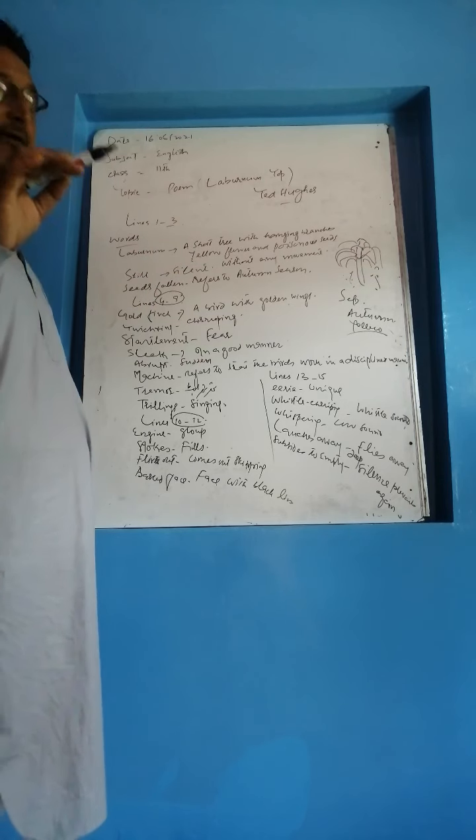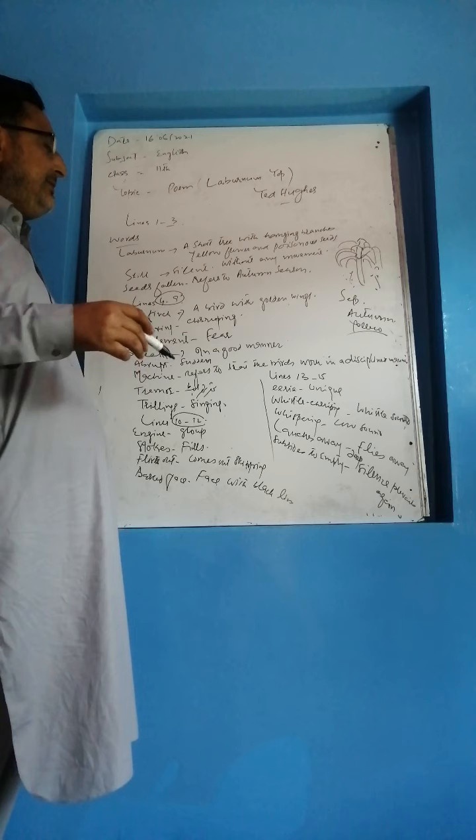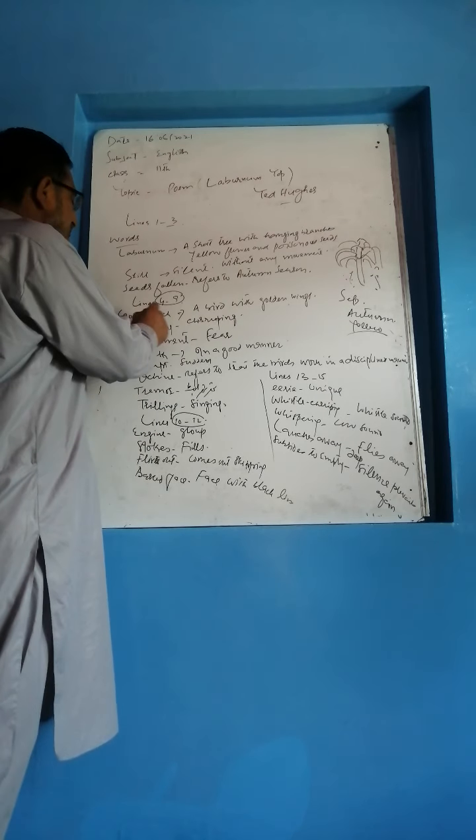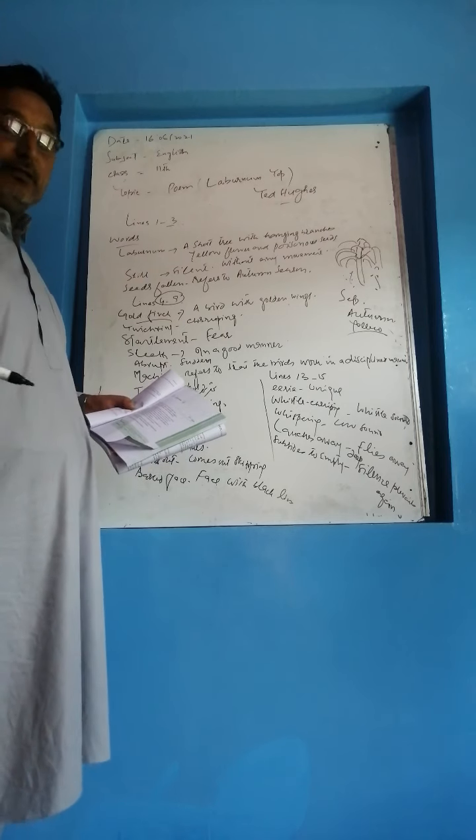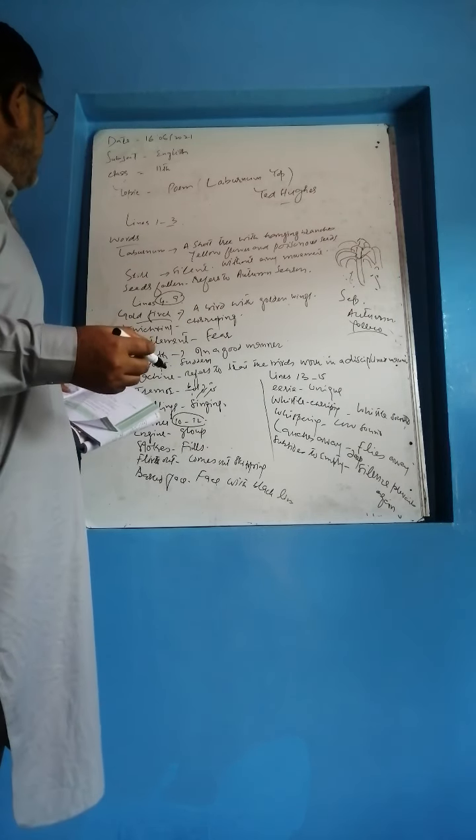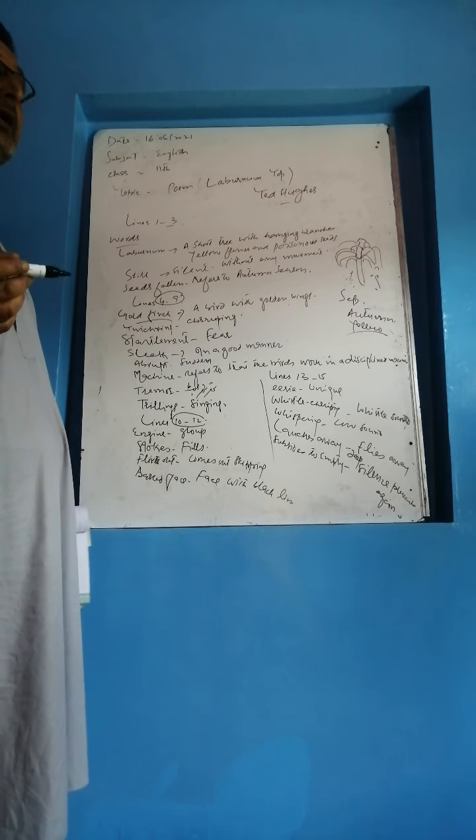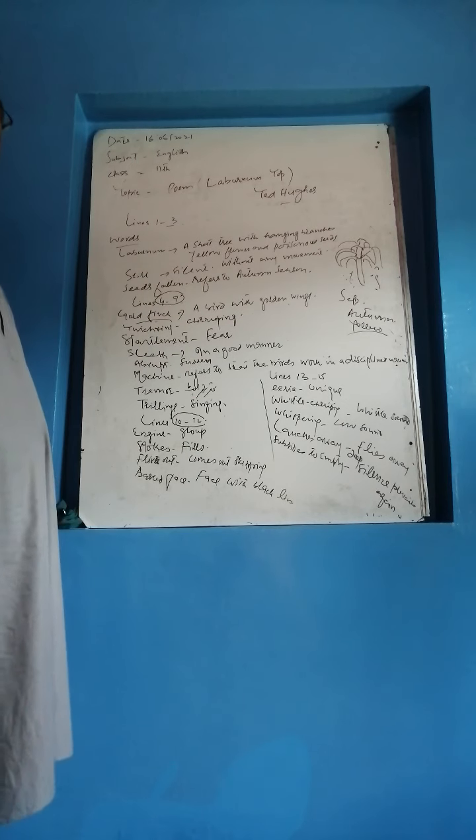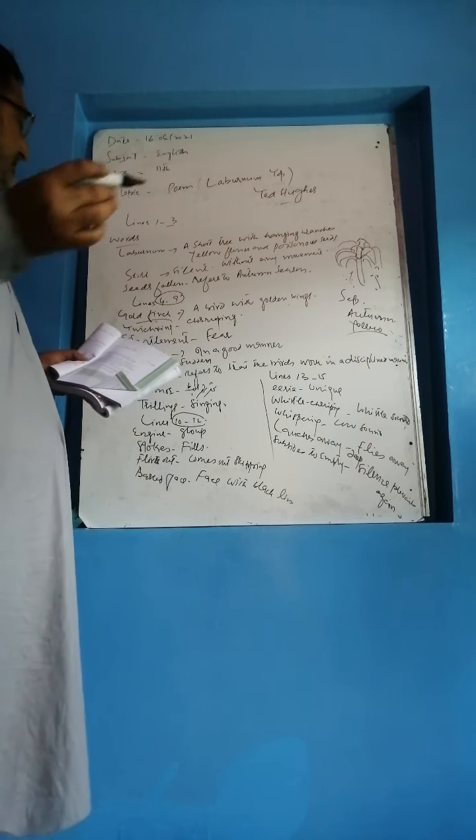So what happened is, first in the first three lines there was silence prevailing everywhere. Only this Laburnum tree stood there, there was nothing. The seeds had already fallen because it was September. Then suddenly a bird, goldfinch, a bird with golden wings, comes with trilling, with suddenness, a startlement at a branch end. When this bird comes, it sits on the top of this tree, and this whole silence, this fearful atmosphere, it breaks up.